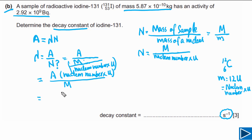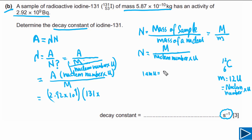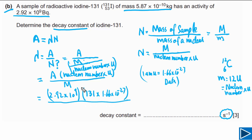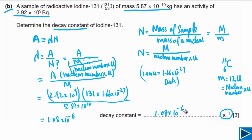Now we plug in the values. Activity = 2.92×10⁹ Bq, nuclear number = 131, and 1u = 1.66×10⁻²⁷ kg (available in the data sheet). Mass of sample = 5.87×10⁻¹⁰ kg. Solving this gives lambda = 1.08×10⁻⁶ per second. This is our final answer.